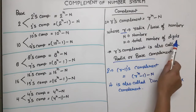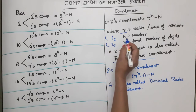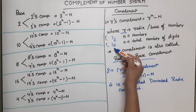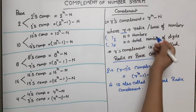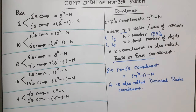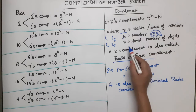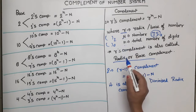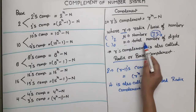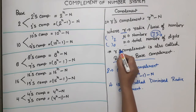For example: if your number system is binary, the base is 2; if octal, the base is 8 — so r = 2 for binary, r = 8 for octal. And n means the number of digits. Suppose your number is 25 in octal (base 8) and you want to find its 8's complement — then 25 is capital N, and since there are 2 digits, small n is 2.